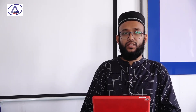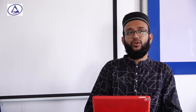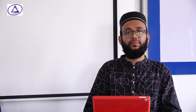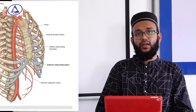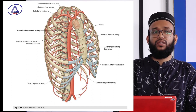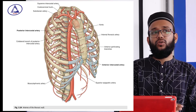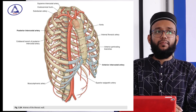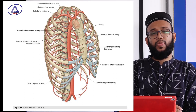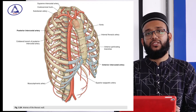Assalamu alaikum, I am Dr. Tanzim Rafat, Lecturer, Bashundhara Ad-din Medical College. Today we will discuss about the intercostal spaces. We know that intercostal space means the space between two adjacent ribs — the upper rib and the lower rib. This space and the ribs bound the thoracic cavity. A human has a total of 11 intercostal spaces, and each space contains some blood vessels, nerves, and muscular structures.